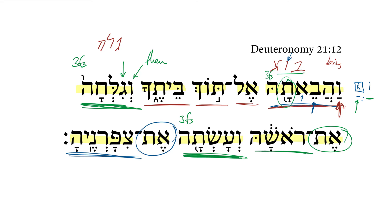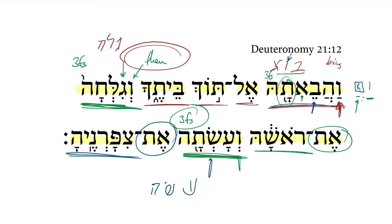The verb here we know is asa, so we have a third-he verb there. It is a third feminine singular form with the vav consecutive, or veqatal. And so when you bring her to the midst of your house, as a result of all of these veqatal forms continuing, then we get the hypothesis: she shall shave her head and do her nails.